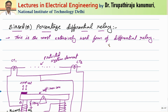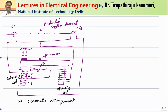This is the most extensively used form of differential relay. Let us see the basic construction. This is a schematic arrangement for the balanced beam type. The beam is balanced and it has two coils — one is the operating coil and the other is the restraining coil. The restraining coil produces the restraining force.